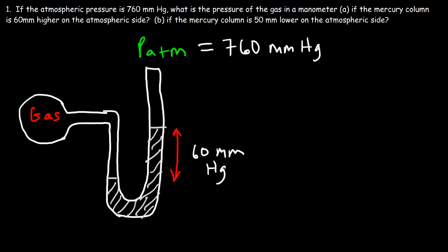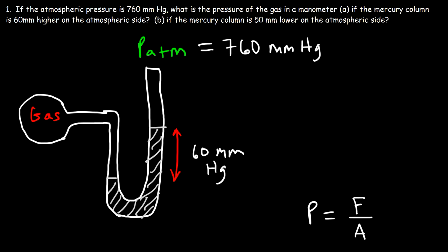The answer is either 700 or 820. What you need to determine conceptually is whether this pressure is greater or less than atmospheric pressure. Pressure is defined as force per unit area. The atmospheric pressure exerts a force on the surface of the fluid, and the gas also exerts a pressure on that fluid — so which one is stronger?